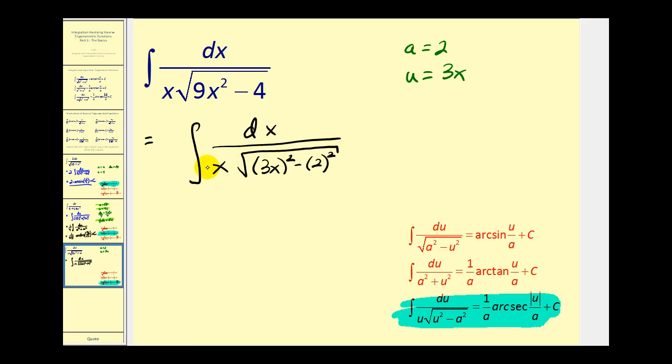Since we do have to have a three here, we can multiply the top and bottom by three, so this would be three x as long as we have three dx in the numerator. Now notice that it does fit the pattern. There's u, there's u squared, and there's a squared.